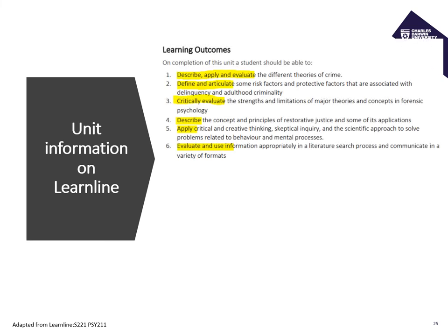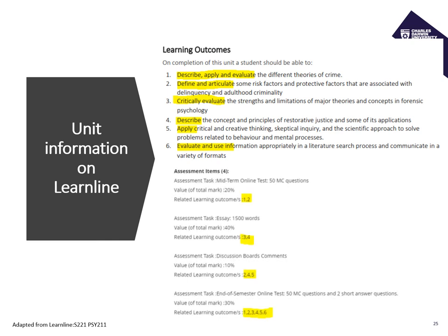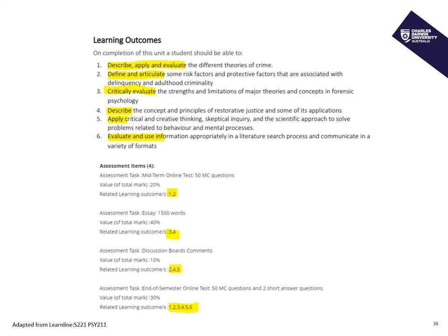We're going onto the unit information on LearnLine and looking at the learning outcomes first — you can see a lot of the language is similar to those task words, which is the common language of academia and academic study. Then we have our assessments — there are four of them: an online test, an essay, discussion boards, and another end-of-semester test. For at least the essay and discussion boards, hopefully you've been given some kind of grading criteria or rubrics to guide you.